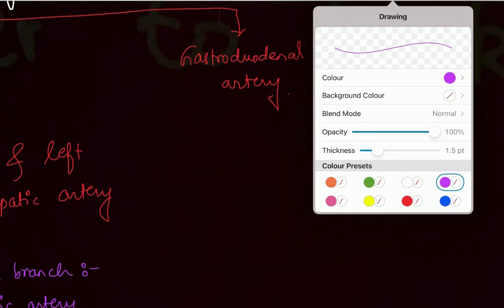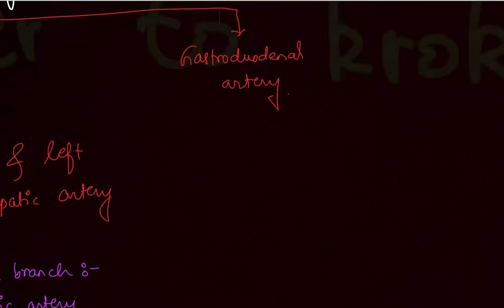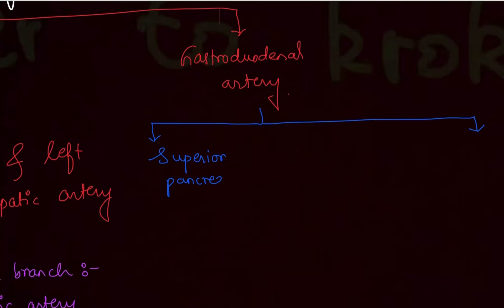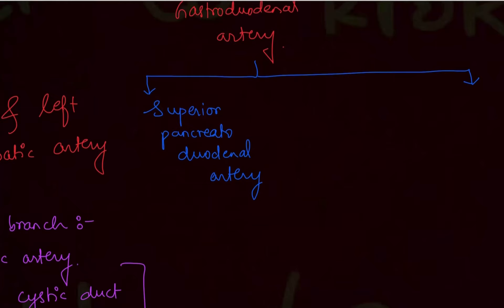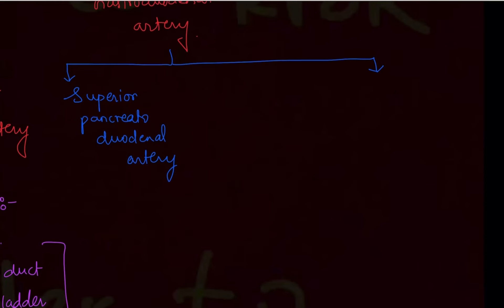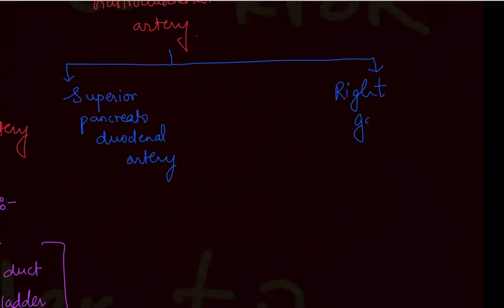Now the gastroduodenal artery also gives off two main branches. The first is the superior pancreaticoduodenal artery — by the name, you can understand it goes superiorly toward the pancreas and duodenum. The second branch is the right gastroepiploic artery.